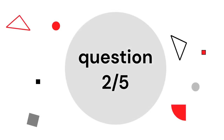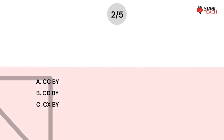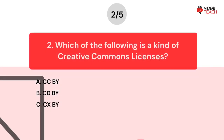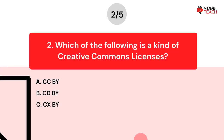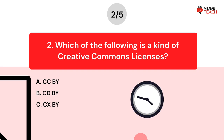Question number two. Which of the following is a kind of Creative Commons license? Option A: CC BY. Option B: CD BY. Option C: CX BY. Now you have about 15 seconds to think about your answer.